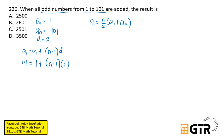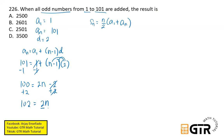Now we can solve for n. Substituting: 101 equals 1 plus (n minus 1) times 2. Subtract 1 from both sides: 100 equals 2n minus 2. Add 2 to both sides: 102 equals 2n. Divide both sides by 2, so n equals 102 divided by 2, which is 51.